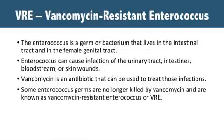Vancomycin-resistant Enterococci, or VRE, are a type of bacteria called Enterococci that have developed resistance to many antibiotics, especially vancomycin. Enterococci bacteria live in our intestines, usually without causing problems. They become a problem when they cause infection, which can occur anywhere in the body. Some common sites include the gallbladder, the urinary tract, and wounds. For some people, especially those who are weak or ill, these infections can become serious.